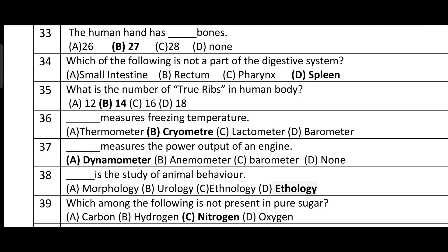Question number thirty-five: what is the number of true ribs in the human body? The number of true ribs is 14. Question number thirty-six: a cryometer measures freezing temperature. Cryometer is an instrument that measures freezing temperature.